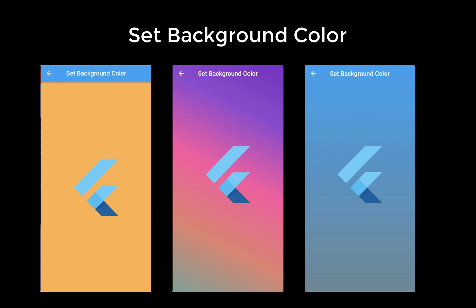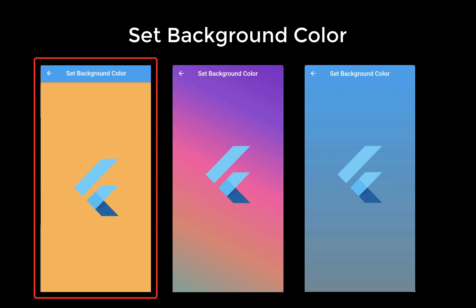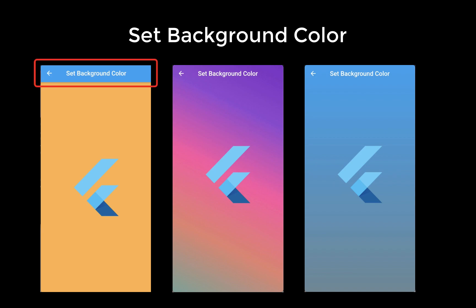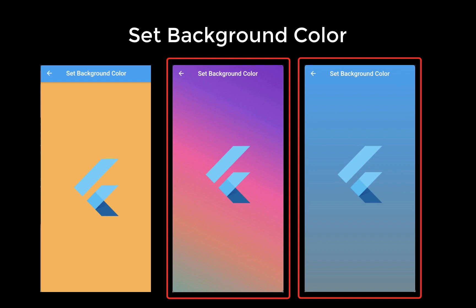How to set the screen background color. First we will set the screen to a single background color and modify the app background color at the top. Secondly, we will create a background color with a gradient.